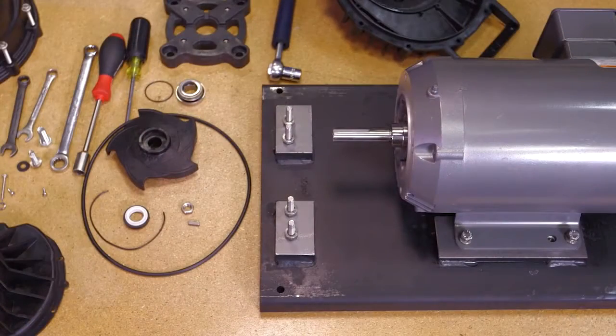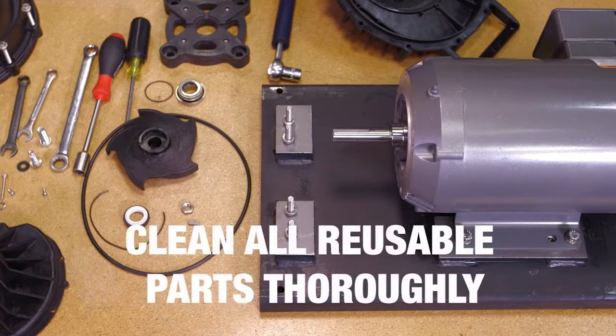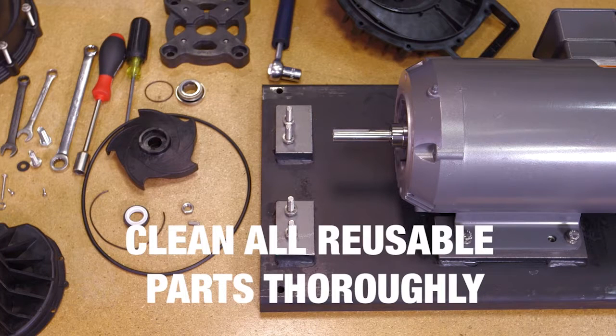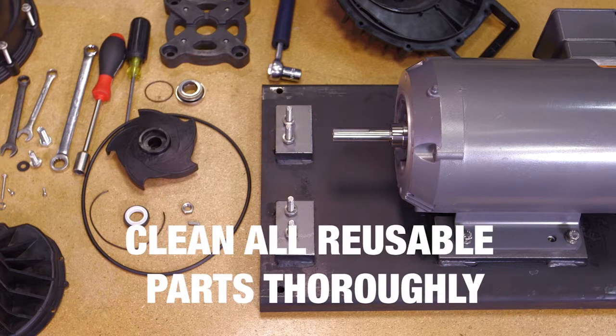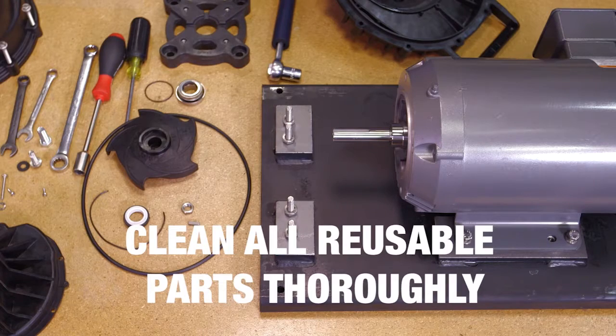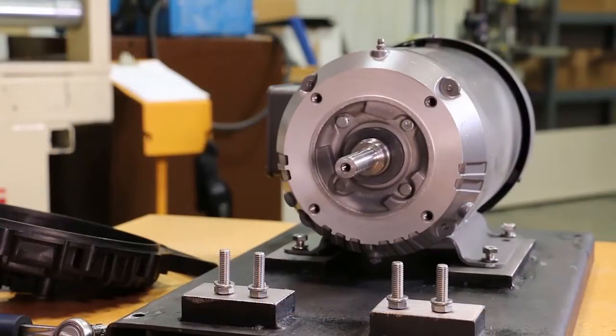With the pump completely disassembled, clean all of the reusable parts thoroughly, removing any traces of old gasket material and trapped or dried liquids that were run through the pump. At this time, it may be necessary to polish the drive unit shaft to remove any corrosion that may have formed.